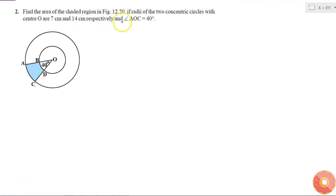Find the area of the shaded region in this figure. If the radii of the two concentric circles—it is given that these two circles are concentric, that means they have the same center, with center O—are 7 cm and 14 cm respectively, and angle AOC is equal to 40 degrees.